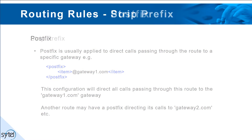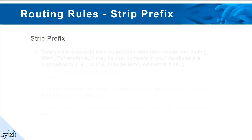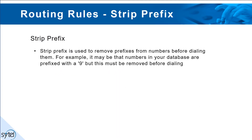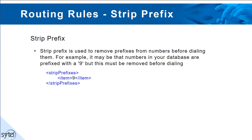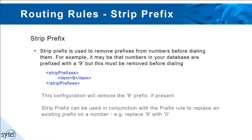Strip prefix: strip prefix is used to remove prefixes from numbers before dialing them. For example, it may be that the number list is prefixed with a 9, but this must be removed before dialing. This configuration will remove the 9 if present. Strip prefix can also be used in conjunction with the prefix rule to replace an existing prefix on a number, such as replacing a 9 with a 0.